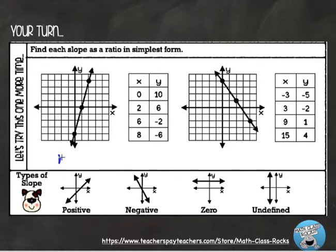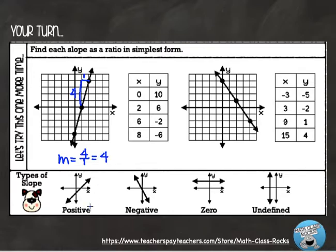I'm going to find the rise over the run. Moving from this point up to this point, I have to go up four spaces — that's my rise. From there I head one space to the right — that's my run. So my slope is four over one, which equals four. If I had gone from this other pair of points, I'd go up eight and over two, and eight over two still equals four. This is a positive slope because we're going up from left to right.